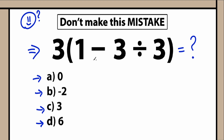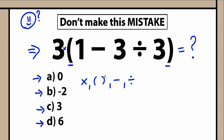What makes all the difference in the world is the order we do this problem. If you look closely, we have a lot of elements: multiplication, parentheses, subtraction, and division — four mathematical elements. And to know the correct principle, correct algorithm, correct method, we need to know the correct order to perform all of this.